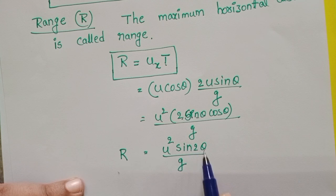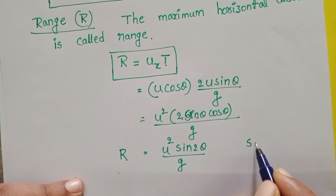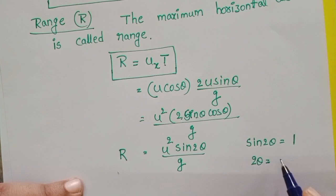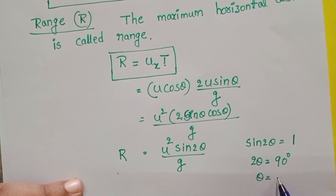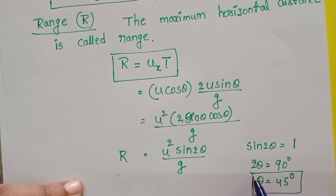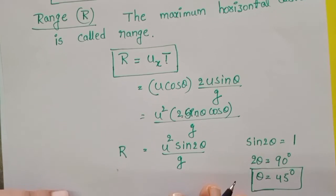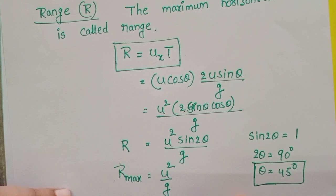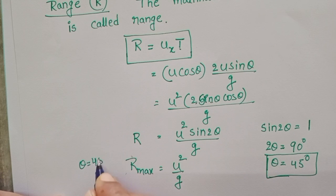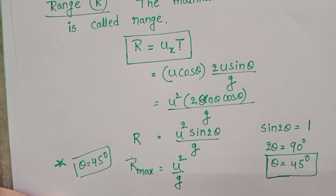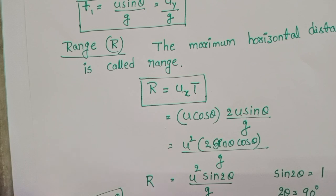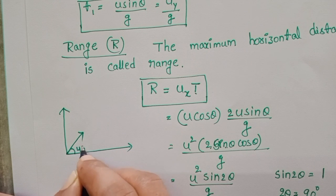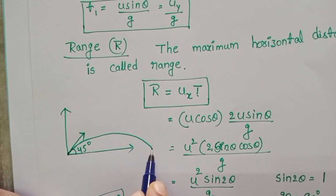Range is maximum when sin 2 theta = 1, i.e., sin 2 theta = sin 90°, so 2 theta = 90°, giving theta = 45°. When an object is projected at 45 degrees with the horizontal, we get maximum range. Maximum range = u²/g. This is a very important point: to get maximum range, the angle of projection must be 45 degrees.